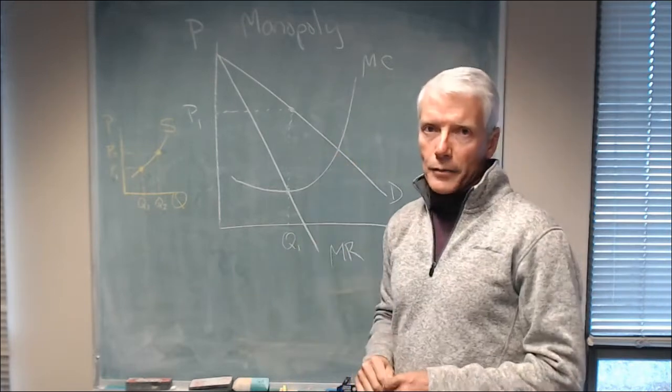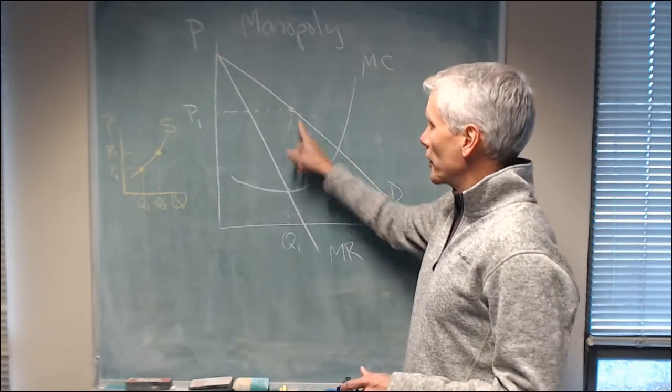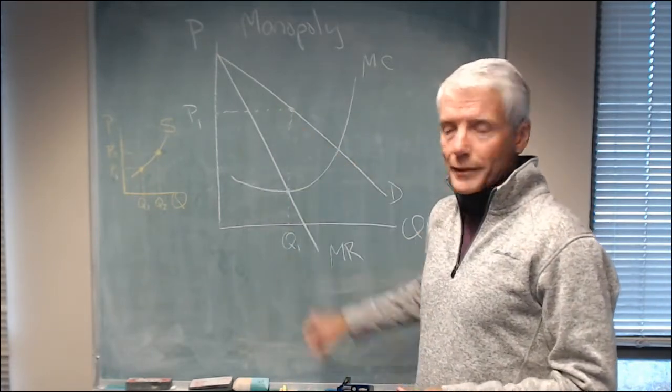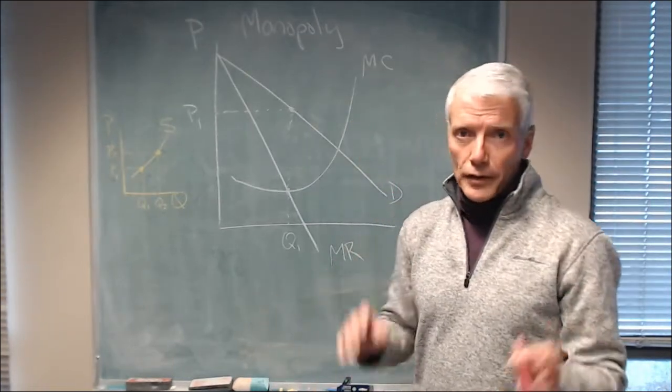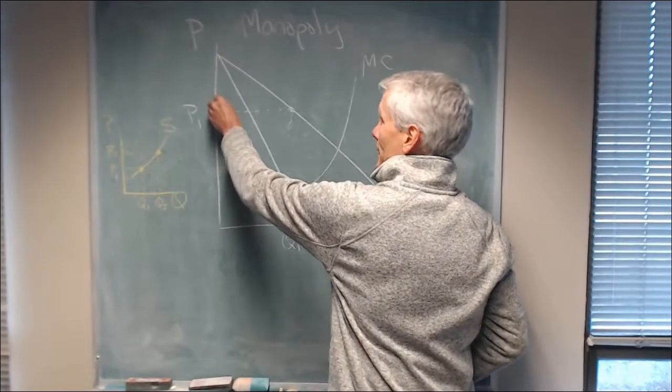Here's a graph for a monopoly, and at price one, quantity one will be supplied. Now suppose that demand were different. Suppose the demand curve looks like this.